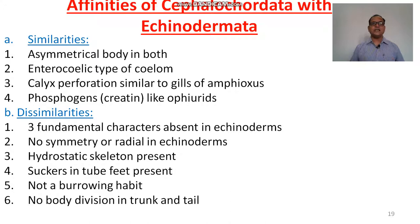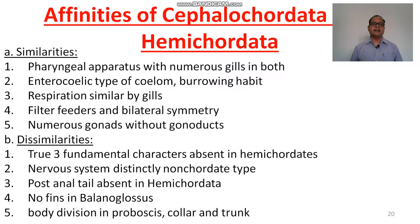Affinities of Cephalochordata with Echinodermata. Similarities: asymmetrical body in both; enterocoelic type of coelome; calyx perforation similar to gills of Amphioxus; and phosphagen-like compounds. Dissimilarities: three fundamental chordate characters absent in echinoderms; no bilateral symmetry — radially symmetrical; hydrostatic skeleton present; tube feet with suckers present; not a burrowing habit; no body division into trunk and tail.